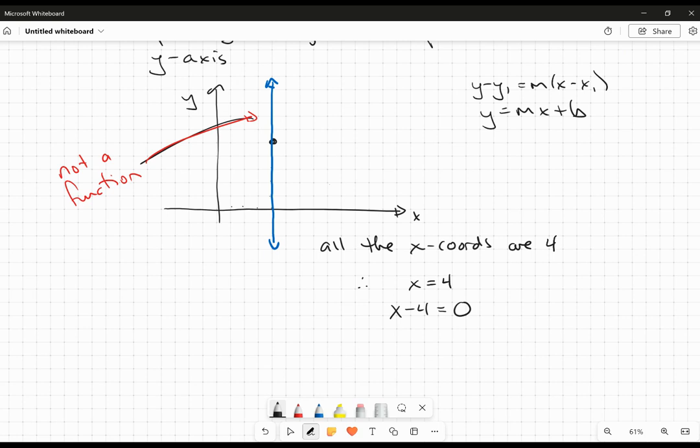These are referring back to two different forms of the equation of the line where we go Ax plus By plus C is equal to 0. Or Ax plus By is equal to C.